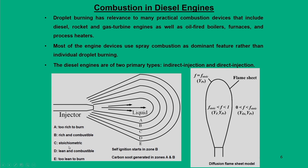On the flame sheet where stoichiometric combustion happens, we may have a combination of fuel as well as products inside the flame sheet, and outside, a combination of oxidizer and products because it is a lean mixture. This is modeled through a diffusion sheet model.